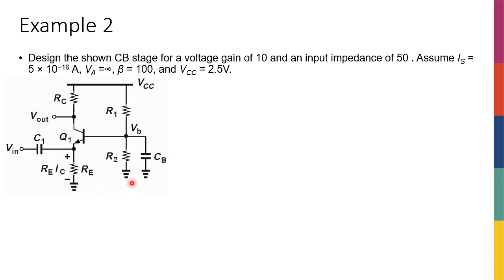When it says design this CB stage, it means you don't have to actually change the circuit schematic, you just have to find out the exact value of R1, R2, RE, RC, and then the current flowing through the transistor and whatever voltage at any point. All the unknowns should be known. We need to design this amplifier to get a gain of 10, to have an input impedance of 50 ohms, and assuming that IS is this much, the beta is 100, and VCC is 2.5 volts.